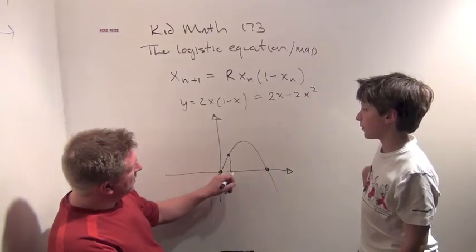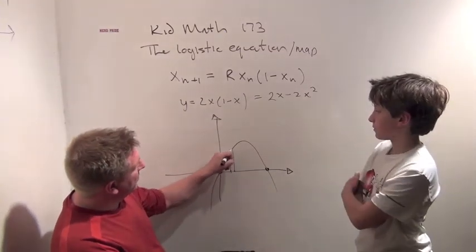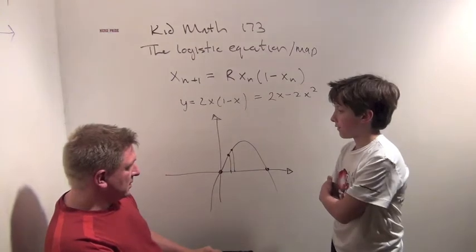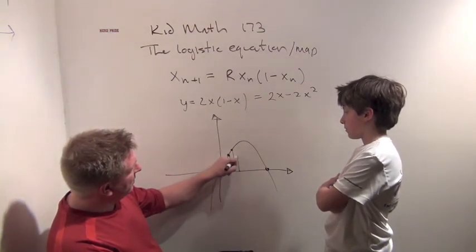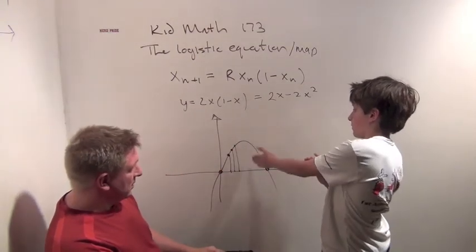And that became our new x value. So then we went a little further over. We could go over to 4 ninths and go up to here. And what did we get? 48 81sts. And then we could go over here and go up. Seems like it is converging to something.